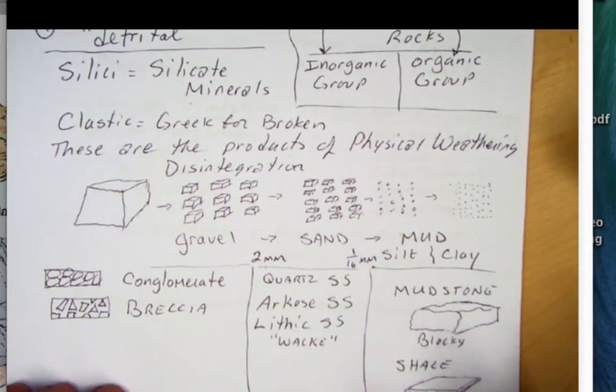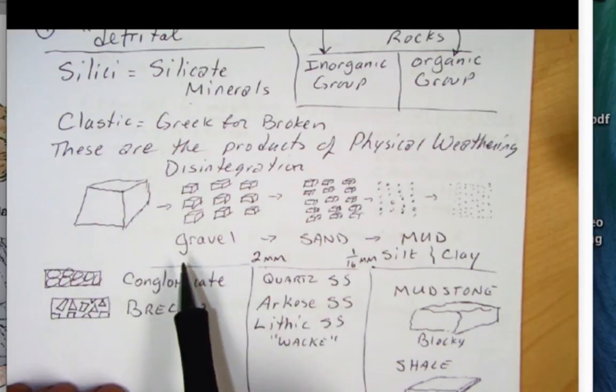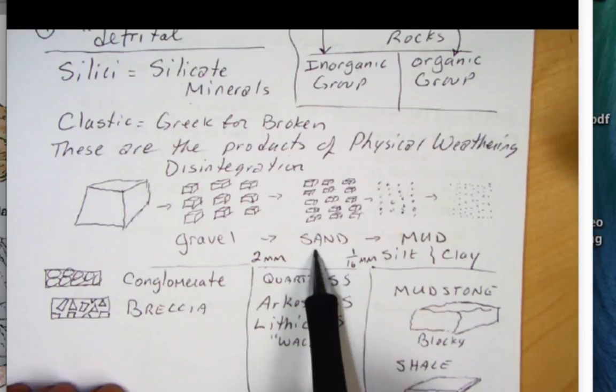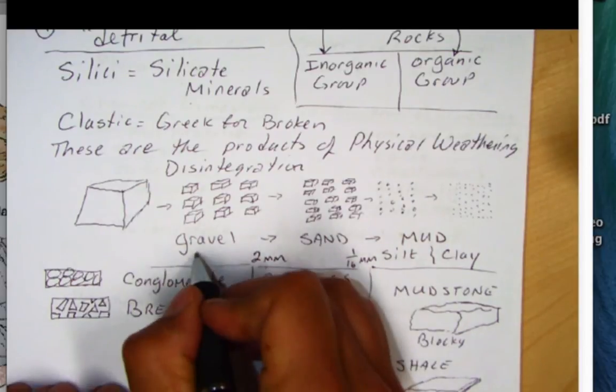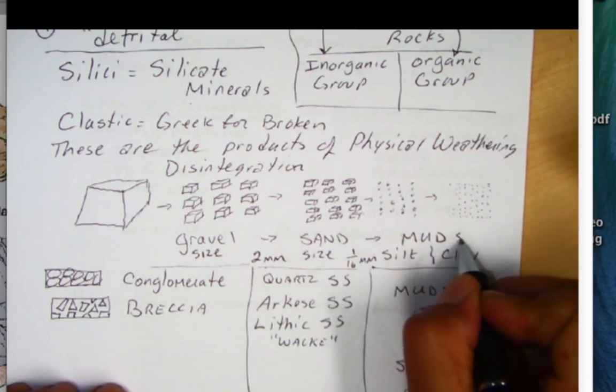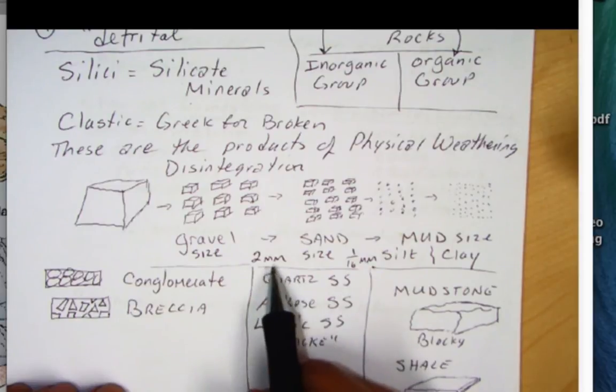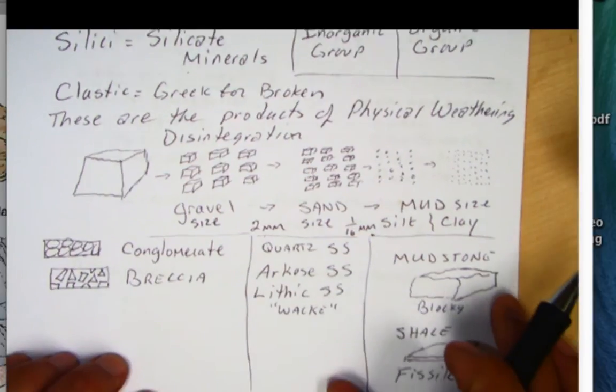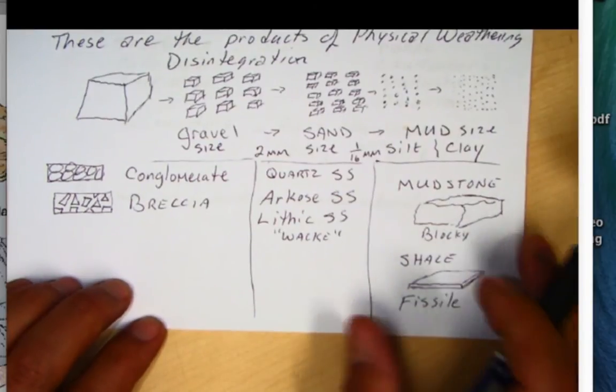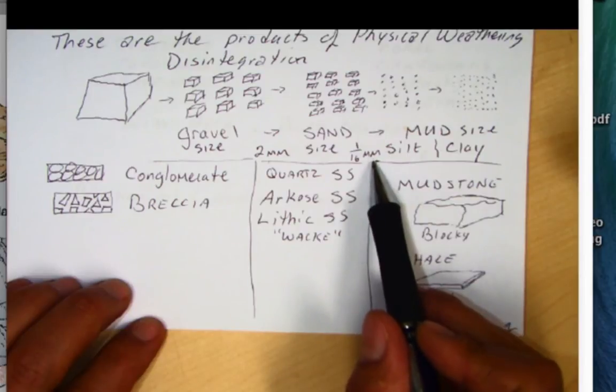And for sedimentary rocks or these silicyclastic rocks, the way we distinguish the different sediment is we have gravel size, sand size, and mud size. These really should have the word size because these are size ratings that we use in geology. So gravel size is anything coarser than two millimeters. Whereas sand is from two millimeters to one sixteenth of a millimeter. And then the mud size is going to be less than one sixteenth. This one sixteenth is basically, you can't see it without the aid of a microscope.